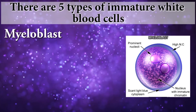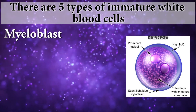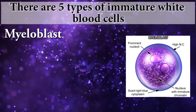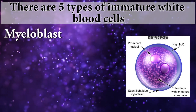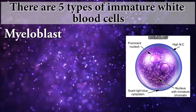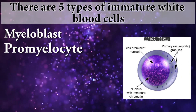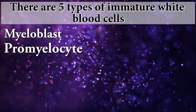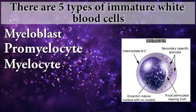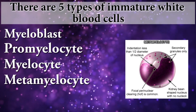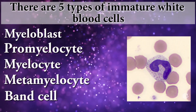There are 5 types of immature white blood cells. Those are myeloblast, promyelocyte, myelocyte, metamyelocyte, and band.